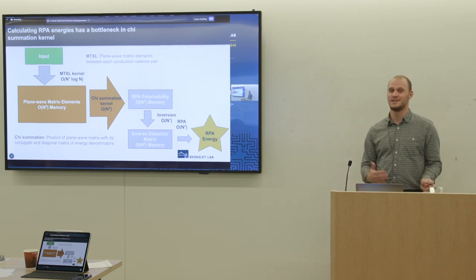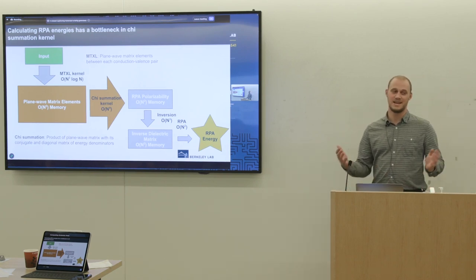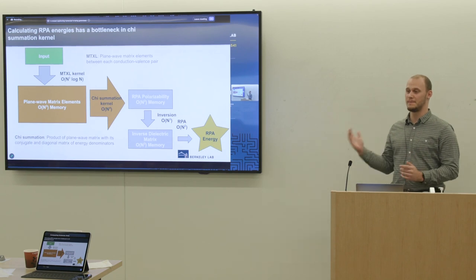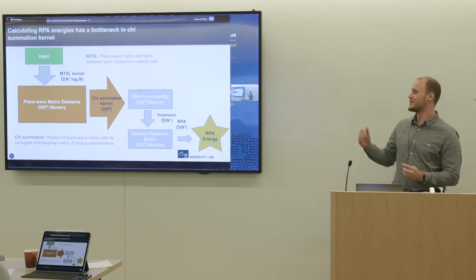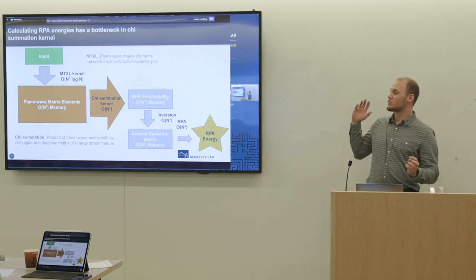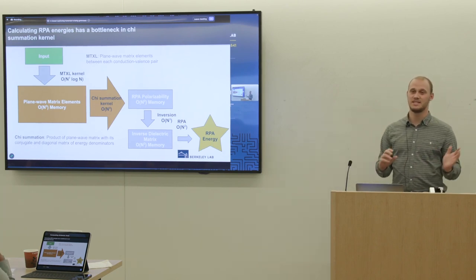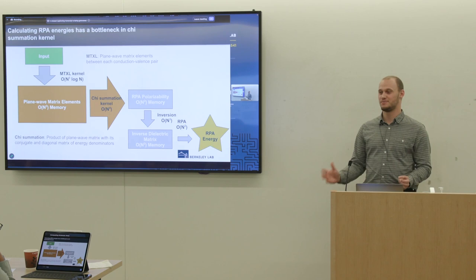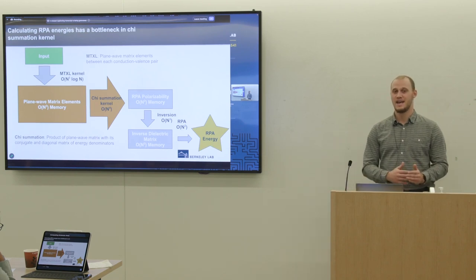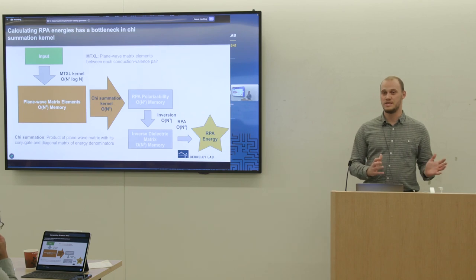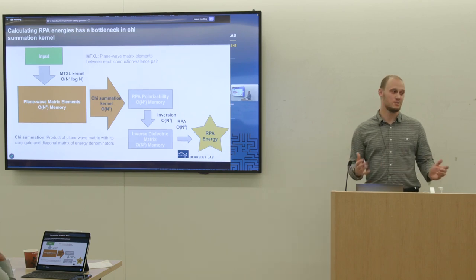Making these matrix elements is basically a Fourier transform of the wave function, which also scales with system size, giving us an N³ log N scaling for the MTXL kernel. This has already been well optimized, so we won't focus on it much, but what it generates is a truly gigantic matrix of plane wave matrix elements — N² vectors of size N — and the chi summation kernel has to deal with that.